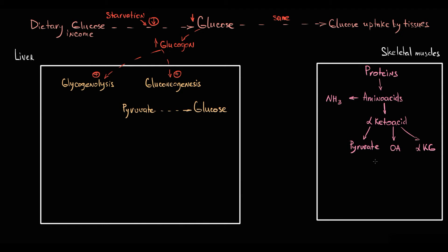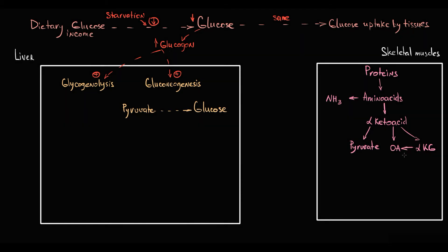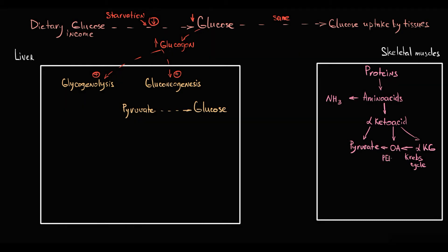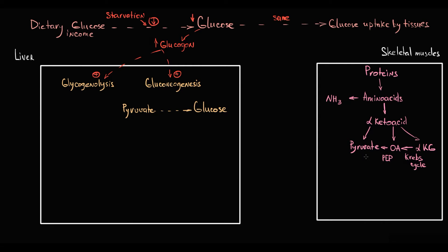Oxaloacetate and alpha-ketoglutarate are intermediate metabolites of the Krebs cycle. In the Krebs cycle, alpha-ketoglutarate can be converted into oxaloacetate, and oxaloacetate can be converted through phosphoenolpyruvate into pyruvate. So basically, all roads lead to pyruvate.